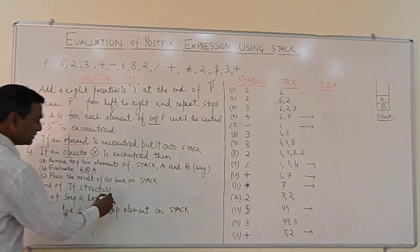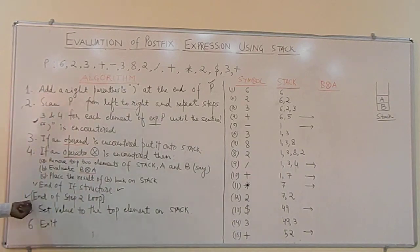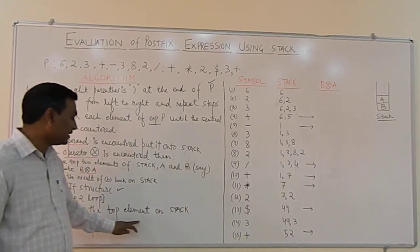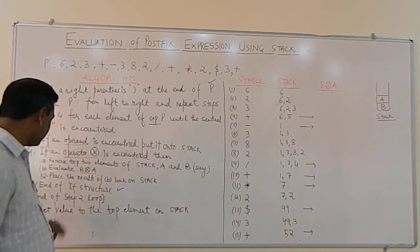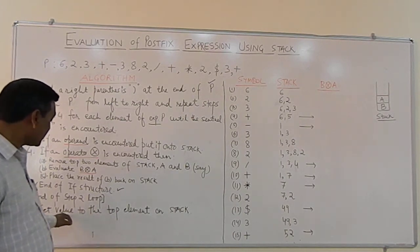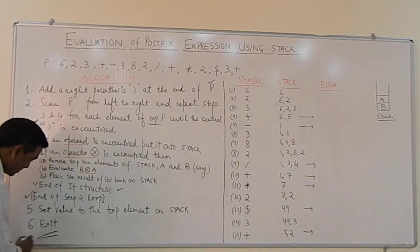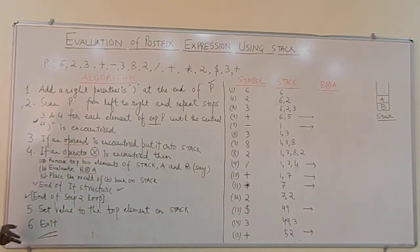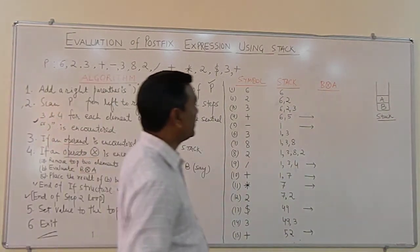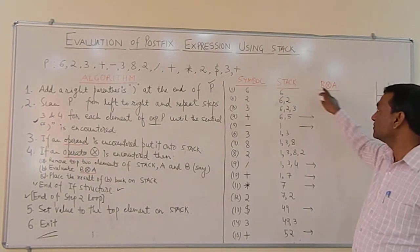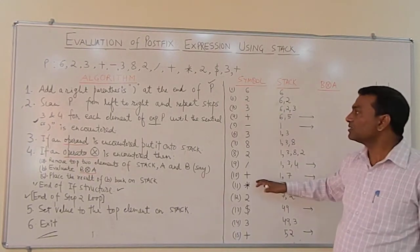This if structure ends here, and this is also the end of the Step 2 loop. In Step 5, whatever value we get, set that value to the top element on the stack, then exit. So in these steps this algorithm completes. Now we will see the actual implementation using the stack. Here we are using 3 columns.